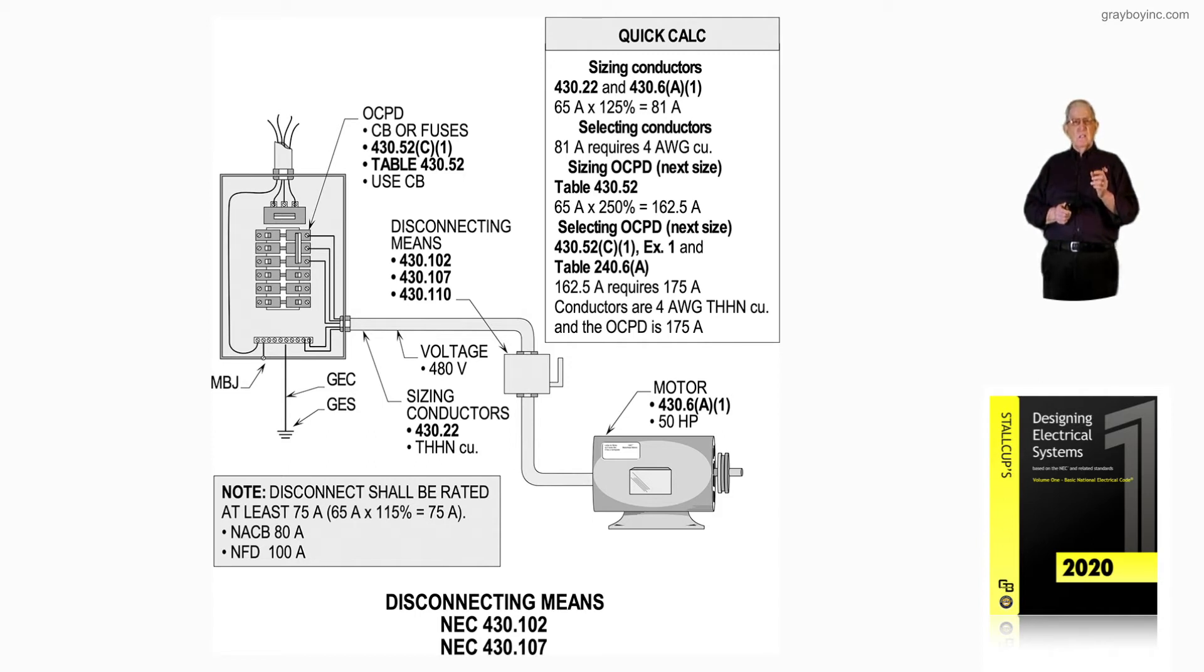Notice the note. It says the disconnect shall be rated at least 75 amps. 65 times 115 percent equals 75. Where do we get that 115 percent? Just go over and look at 430.110A. 75 amps would require a non-automatic circuit breaker at 80 amps or a non-fusible disconnect at 100 amps. Neither has any overcurrent characteristics. It'd be mostly like a single-pole switch.